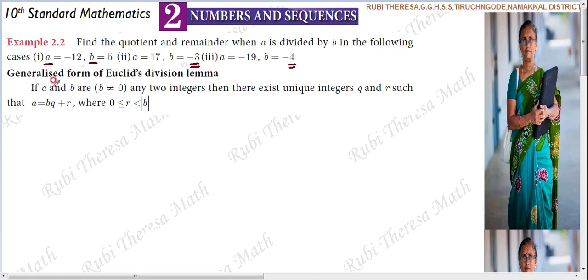The generalized form of Euclid division lemma states: if A and B are any two integers, then there exist unique integers Q and R — the quotient and the remainder.